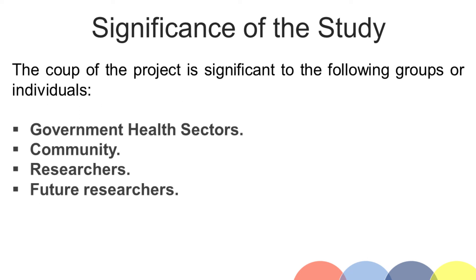Community: the people of the community will be greatly benefited by this monitoring system. This will help them seek assistance from the sectors that are responsible for providing help to reduce the poverty and health risks they might suffer due to malnutrition.